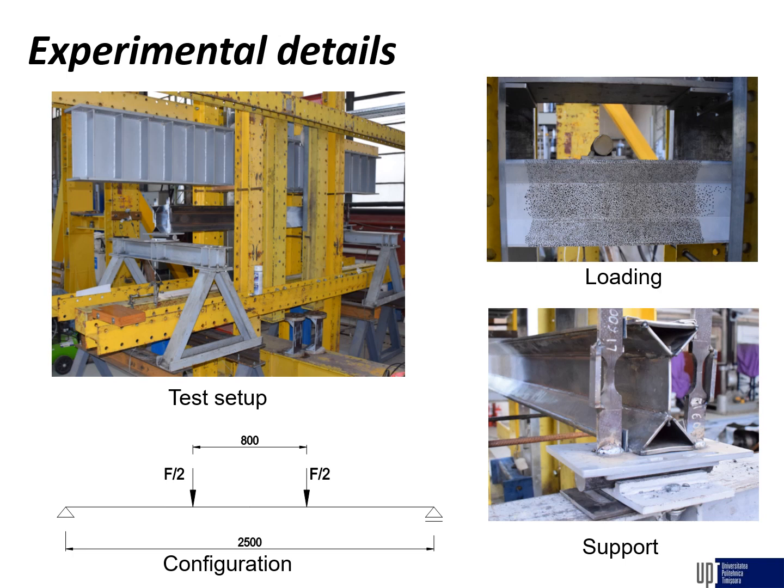The supports were considered to be pin at one end and roller at the other end, being allowed for horizontal displacement. In order to keep the cross section in the initial position, the fork configuration was also used for the support, which is presented in this figure.